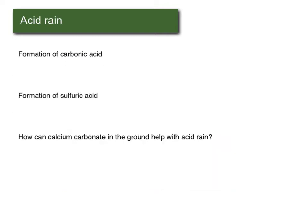There are two acids that form. The first is carbonic acid, which happens when carbon dioxide combines with water to make H2CO3. As the name suggests, this is an acid, so it's going to lower the pH of the water.